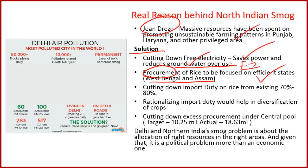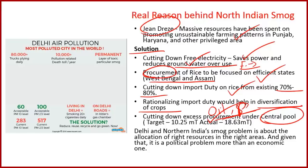A third solution is cutting down the import duty on rice from the existing 70 to 80 percent. Crop diversification is another solution — farmers can be incentivized to grow oilseeds and pulses, which consume less water. Finally, cutting down excess procurement under the central pool is essential; Punjab's rice procurement target was 10.25 million tons but actual procurement reached 18.63 million tons due to excessive production.